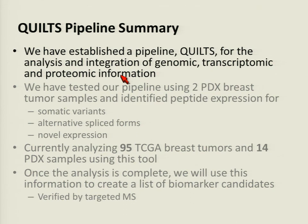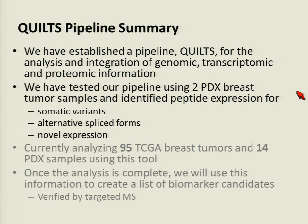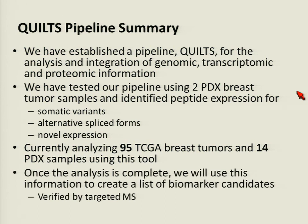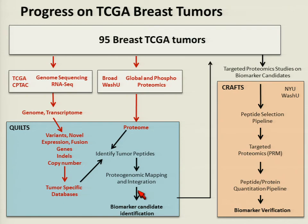To summarize this pipeline: we've established QUILTS for the analysis and integration of genomic, transcriptomic, and proteomic information. We've tested our pipeline using two PDX breast tumor samples and identified peptide expression for somatic variants, alternatively spliced forms, and novel expression. We are currently analyzing 95 TCGA breast tumors and 14 PDX samples using this tool. Once complete, we will use all information to create a list of biomarker candidates and verify them by targeted MS. Tumor-specific databases for all 95 tumors have been created, and proteomics is currently being done at the Broad.